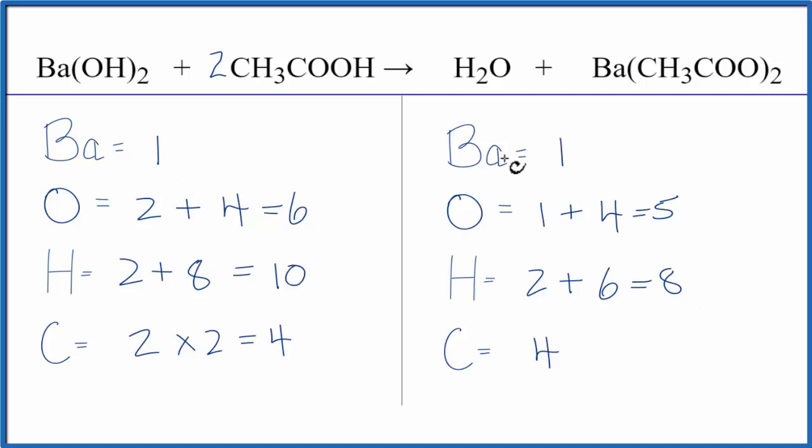At this point, barium and carbon are balanced. It's the oxygen and hydrogen that we need to fix. If I could just have one more oxygen and two more hydrogens, the equation would be balanced. I can accomplish that by putting a two in front of H2O.